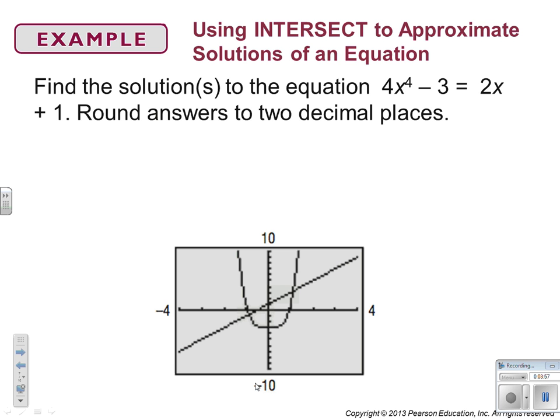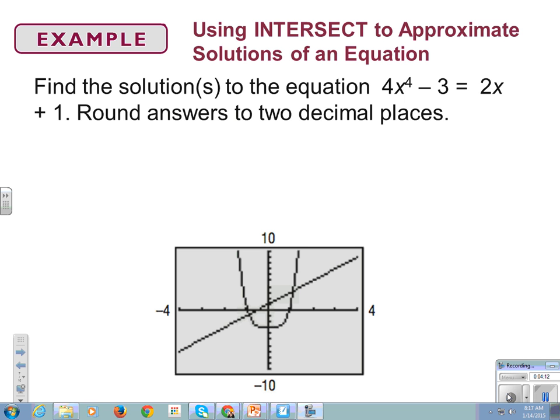All right, so now we're going to use intercept. So, when you have an equation 4x to the fourth minus 3 equals 2x plus 1, we're going to graph that and round the answers to the nearest two decimal places. All right, so the way you use graphing to find the solution, and I'm going to pull up my Desmos.